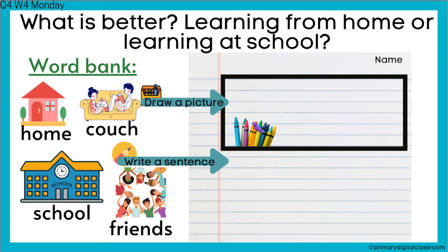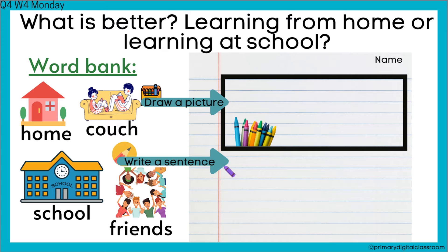First you're going to draw a picture. If you like learning from home better, then you're going to draw a picture of learning from home. If you think learning at school is better, then you're going to draw a picture of that. And then you're going to write a sentence explaining it.